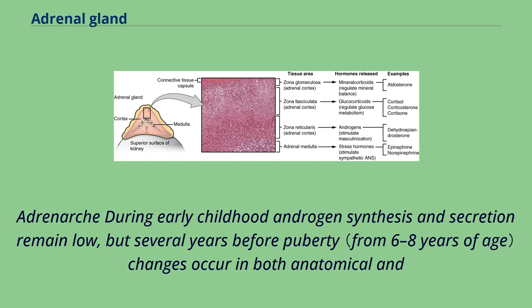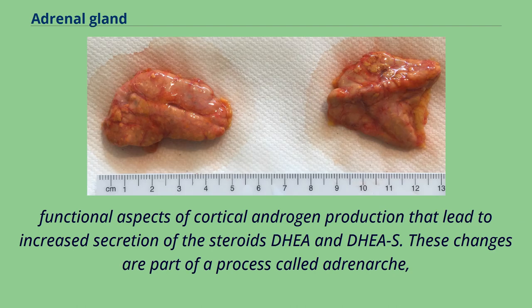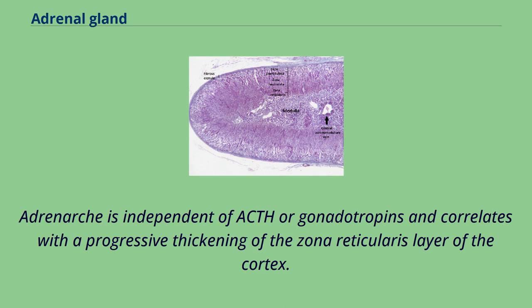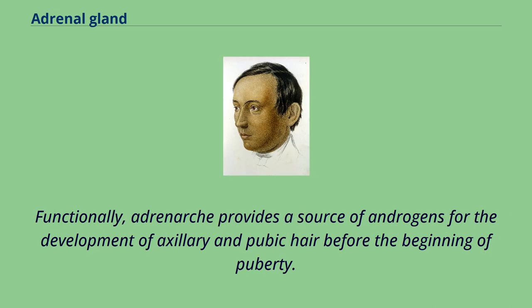During early childhood, androgen synthesis and secretion remain low. However, several years before puberty, changes occur in both anatomical and functional aspects of cortical androgen production that lead to increased secretion of the steroids DHEA and DHEAS. These changes are part of a process called adrenarche, which has only been described in humans and some other primates. Adrenarche is independent of ACTH or gonadotropins and correlates with a progressive thickening of the zona reticularis layer of the cortex. Functionally, adrenarche provides a source of androgens for the development of axillary and pubic hair before the beginning of puberty.